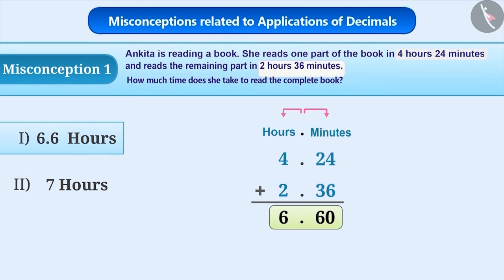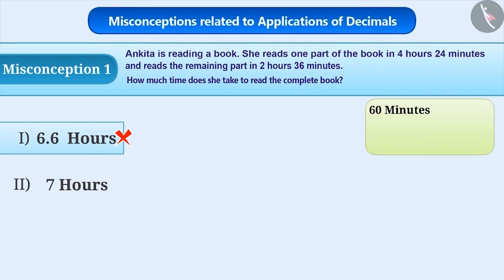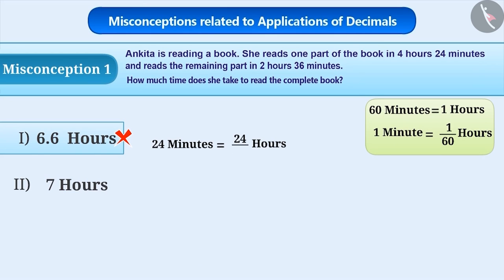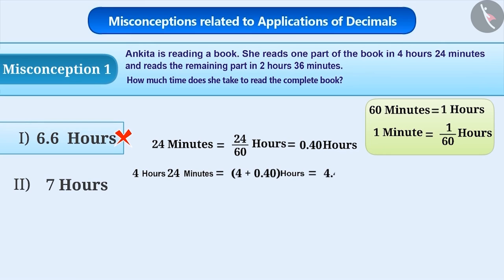But this is a misunderstanding because this is not the correct way to represent time in decimals. Let's learn the correct method. As you know, 60 minutes is equal to 1 hour. So, 1 minute is equal to 1 by 60 hours. Therefore, 24 minutes equals 24 by 60 hours equals 0.4 hours. So, 4 hours and 24 minutes equals 4 plus 0.4 hours equals 4.4 hours.